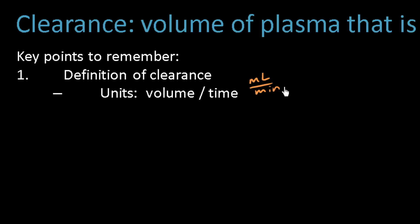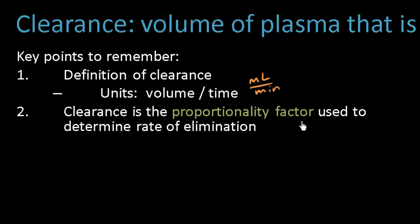Clearance does not tell us how much drug is being removed — it tells us the volume of plasma cleared of drug per unit time. If we want to figure out the amount of drug being cleared, we're talking about the rate of drug elimination. Clearance is the proportionality factor used to determine that rate of elimination, as defined in many textbooks.